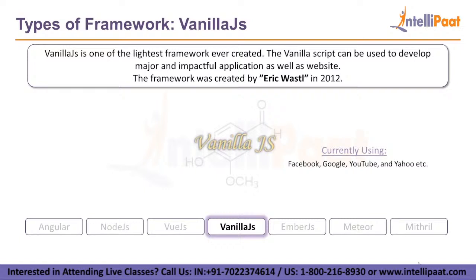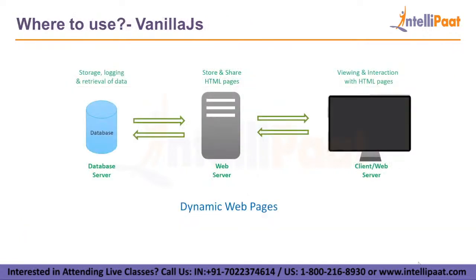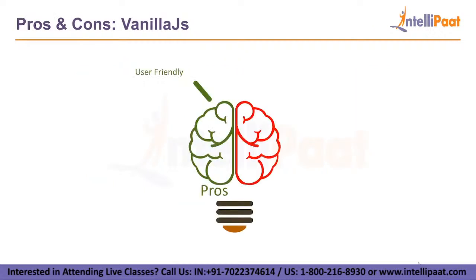Now, the fourth framework — Vanilla.js. The Vanilla.js script can be used to develop, measure, and impact applications as well as websites. This framework was created in 2012 by Eric Wastell. Facebook, Google, YouTube, and Yahoo are currently using the Vanilla.js framework for their home pages. Where to use this framework: we can develop dynamic web pages where the client requests a service from a web server, which collects data from a database server and then provides services to the client.